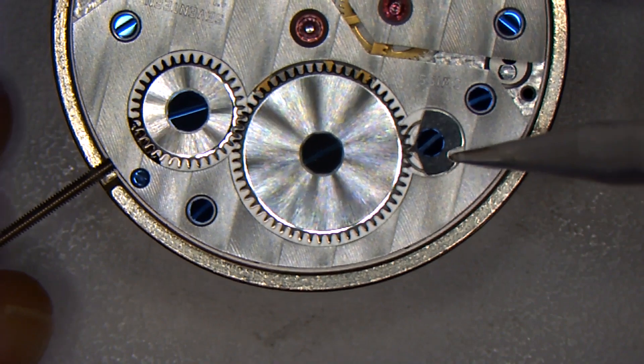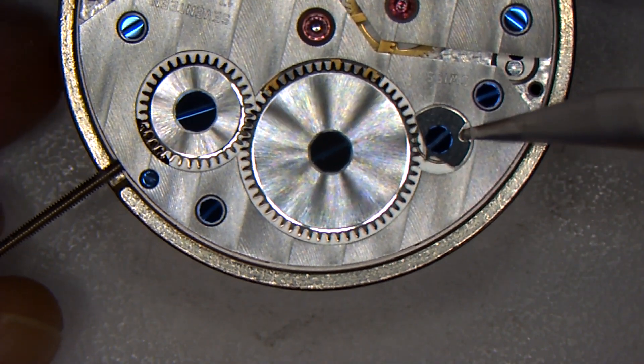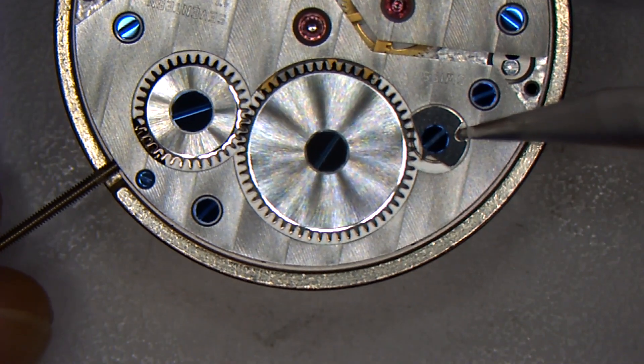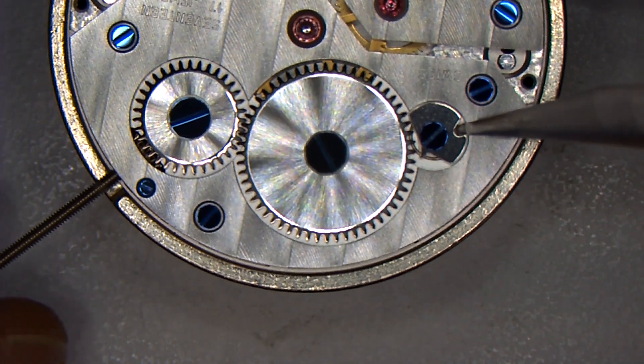As I give it just a little bit of a wind with my left hand, now I can disengage the click from in between the ratchet wheel teeth, and I will be able to let that power down on that movement very gingerly.